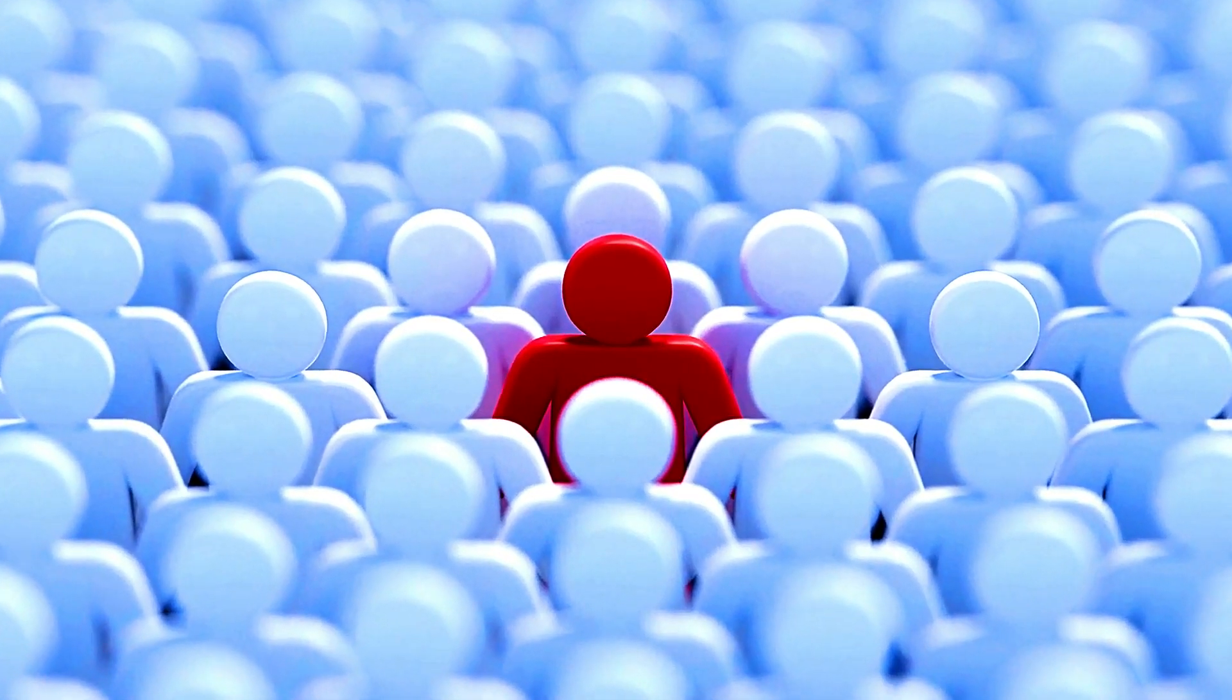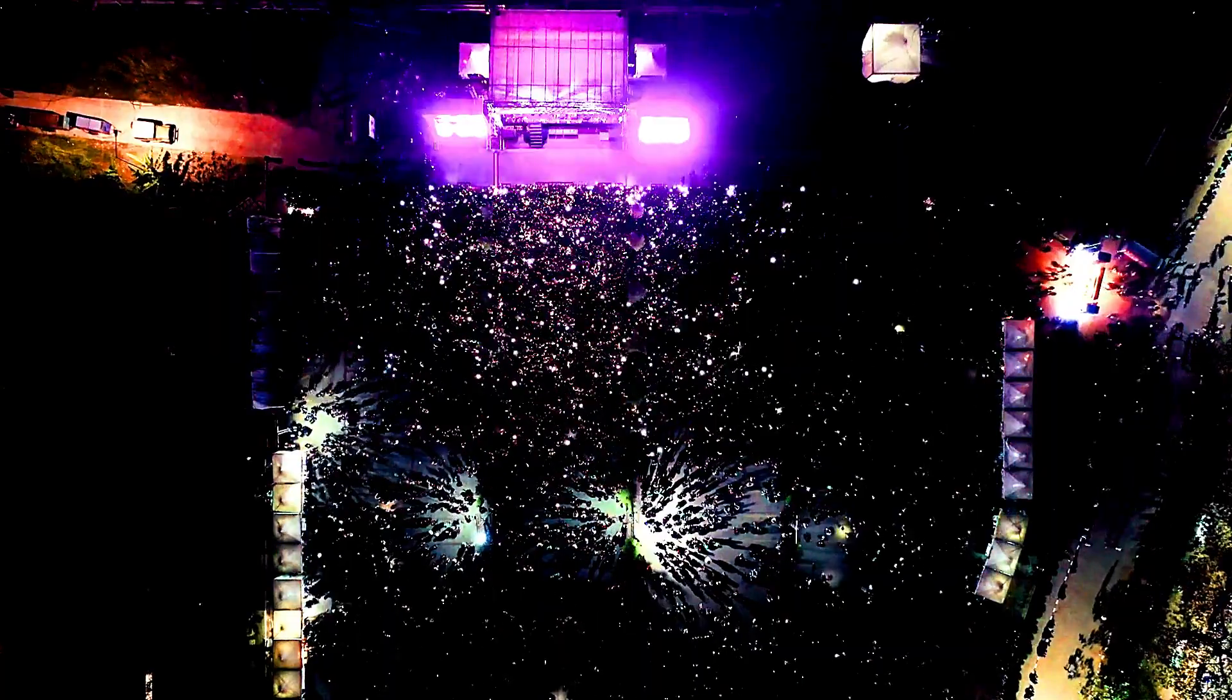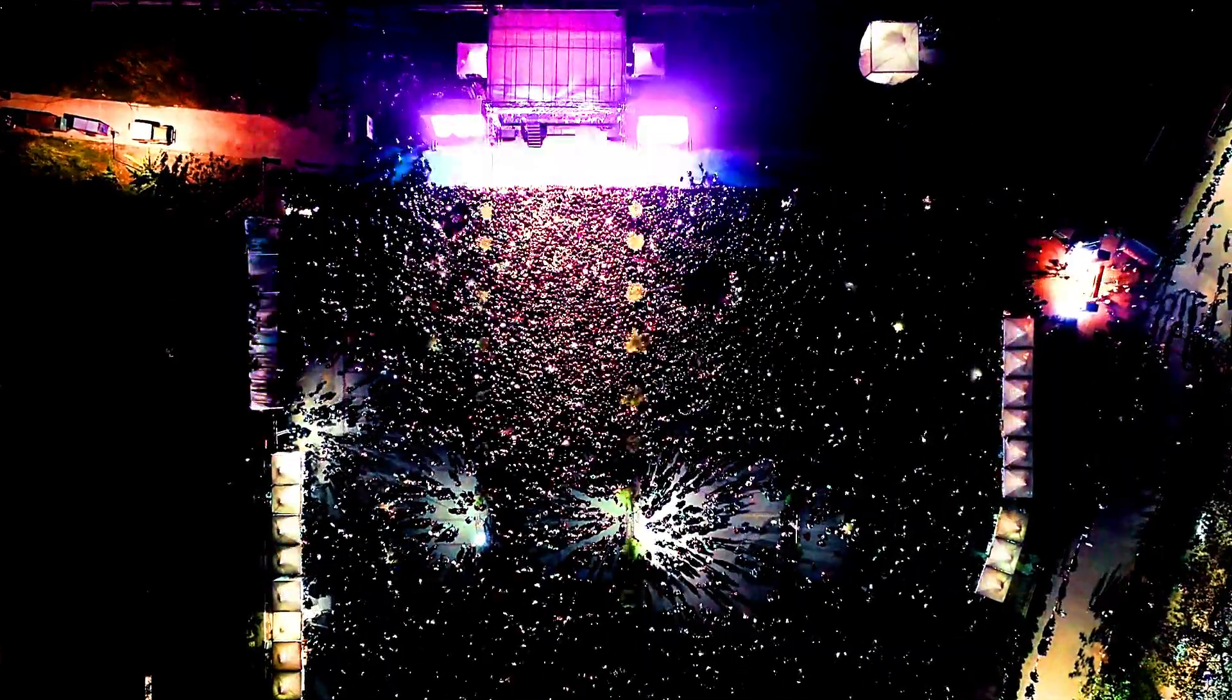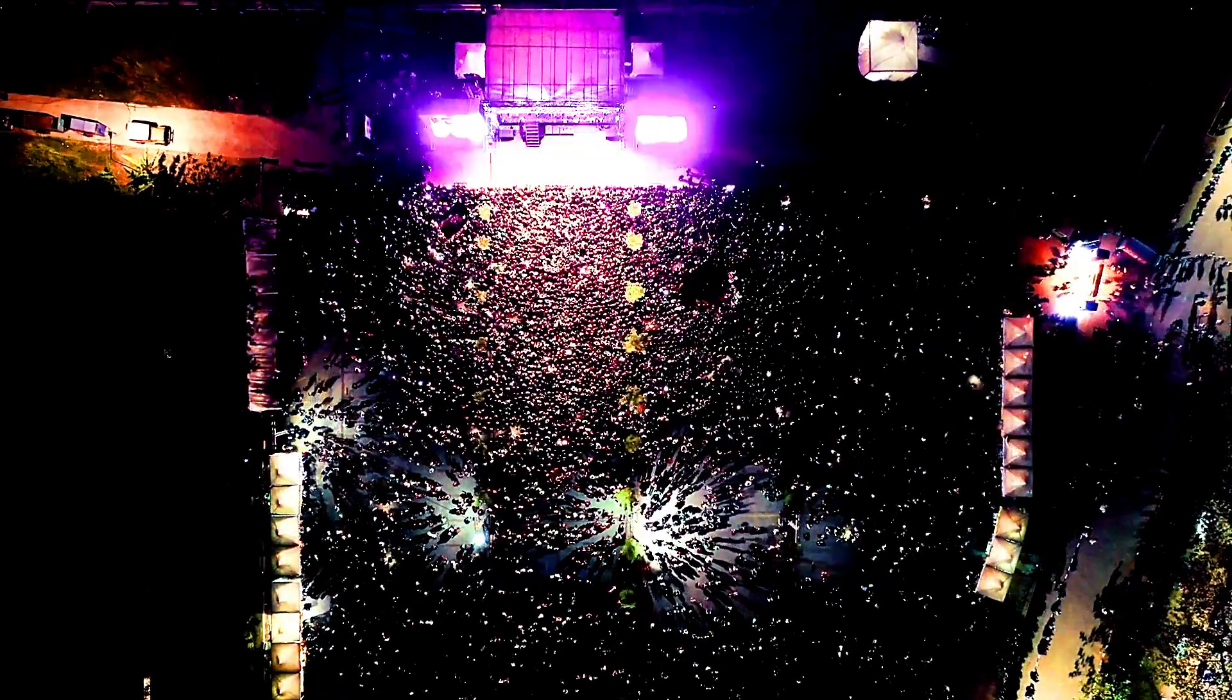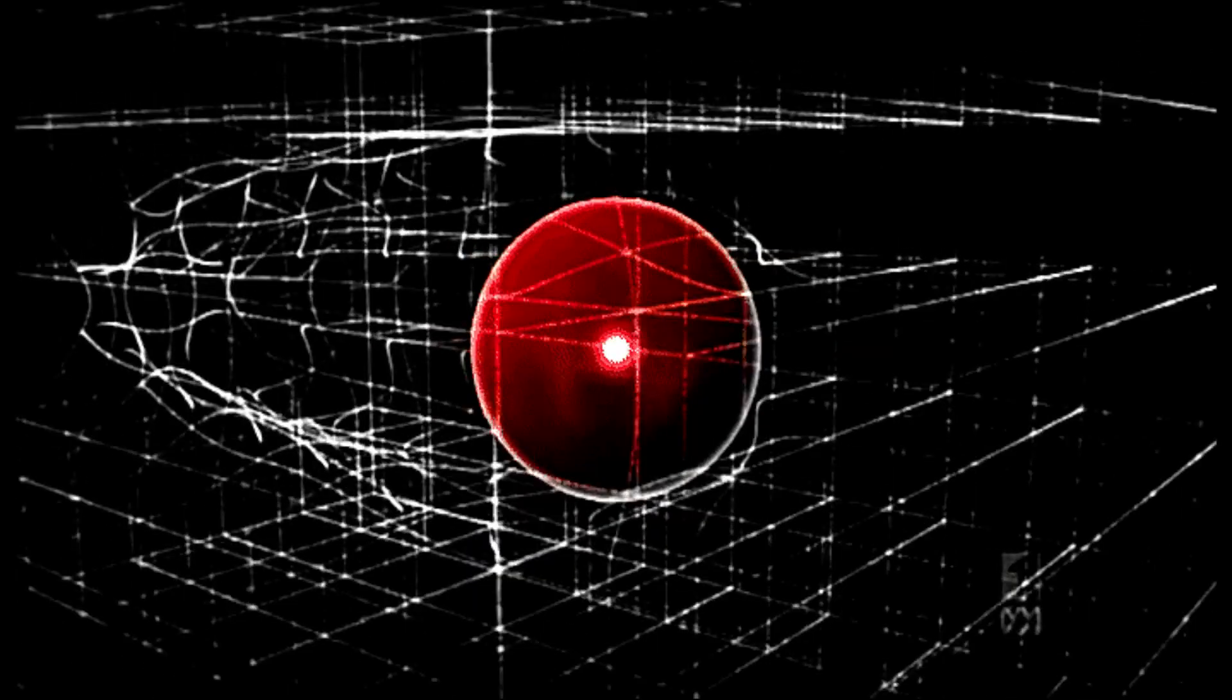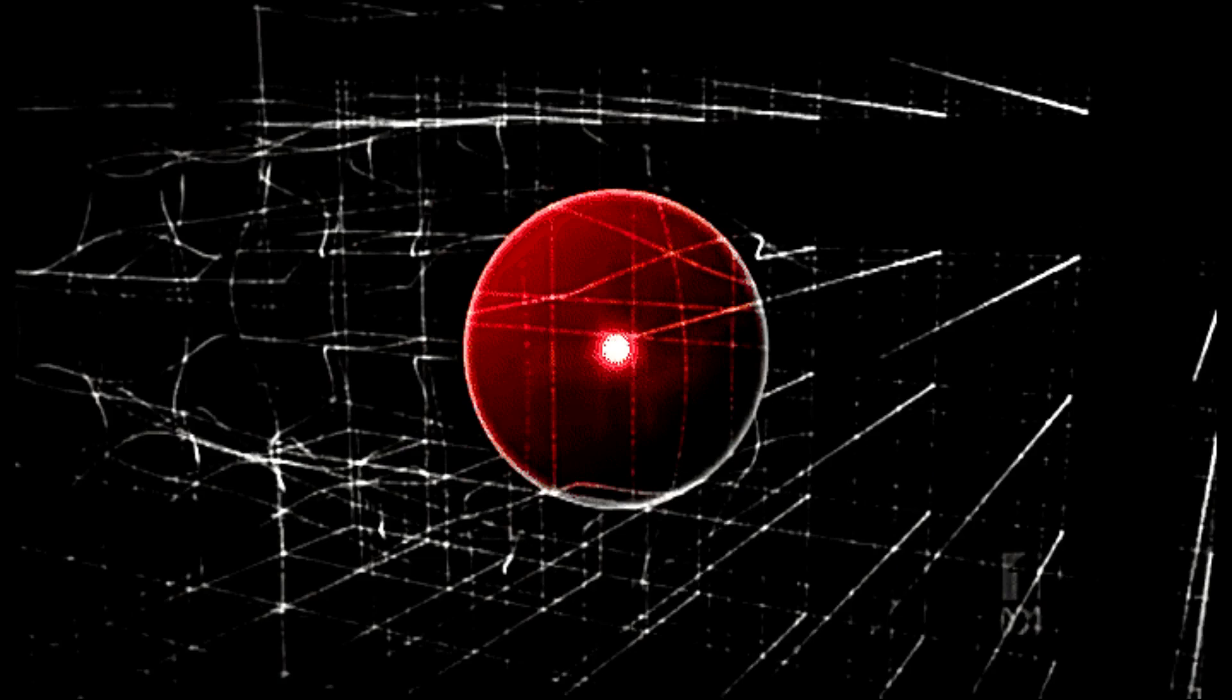Now, let's imagine a person walking through the room. This person represents a particle moving through the Higgs field. As the person moves, they encounter resistance from the crowd, slowing them down. The resistance experienced by the person represents how particles gain mass as they interact with the Higgs field. The more resistance a person encounters, the more massive they become.